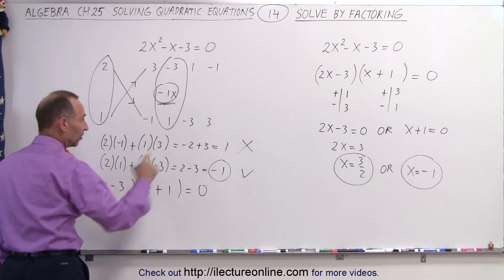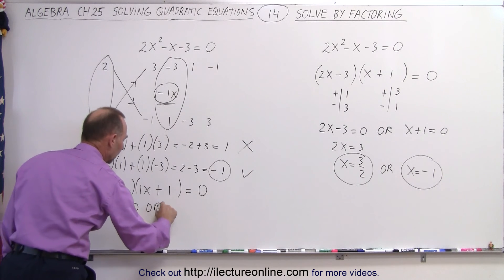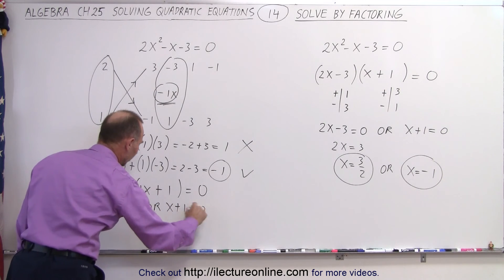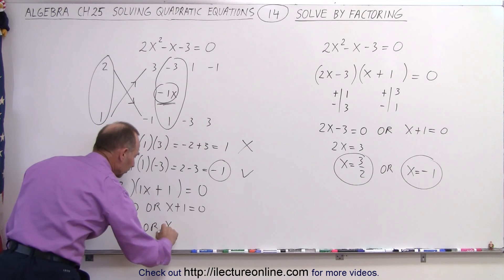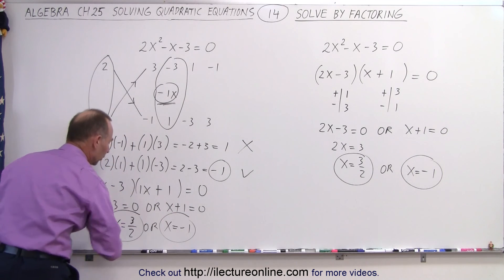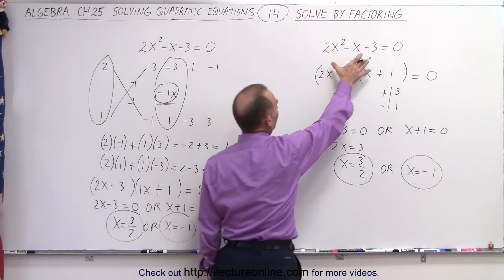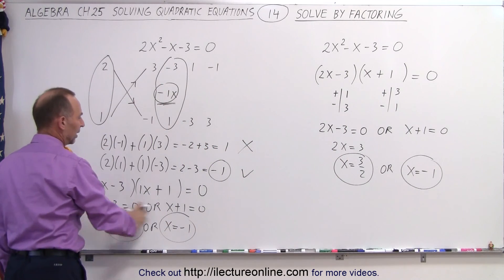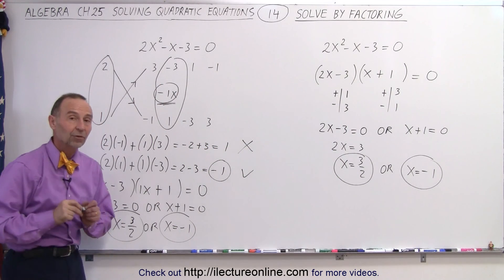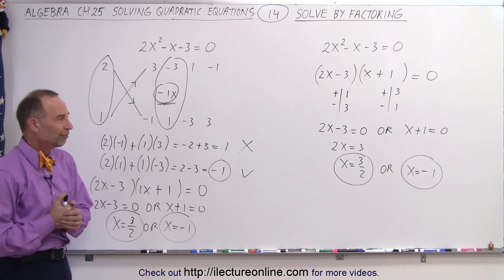And then again we do the same as we did before. We say that 2x minus 3 equals 0, or x plus 1 equals 0, which means that x equals 3 over 2, or x equals negative 1 as the two possible solutions. So either we can solve by factoring, doing it quickly like this, or if you don't quite see that, we can simply use the FOIL method and systematically get to the correct answer as well. And that is how it's done by solving quadratic equations using factoring.